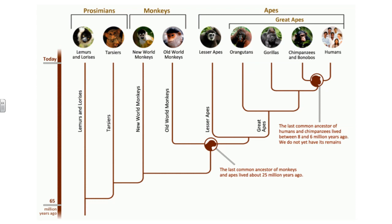If we take a look at the evolution of primates, they first came about around 65 million years ago when another important event happened — the extinction of the dinosaurs. This allowed for the age of mammals, and one of those mammals that came about are the primates.